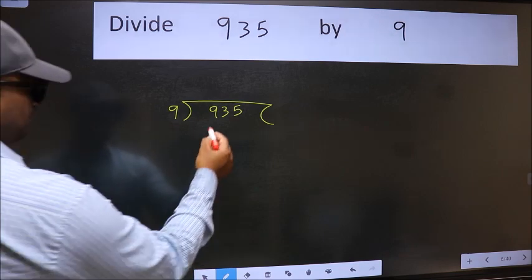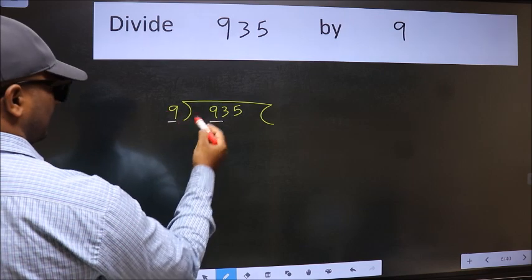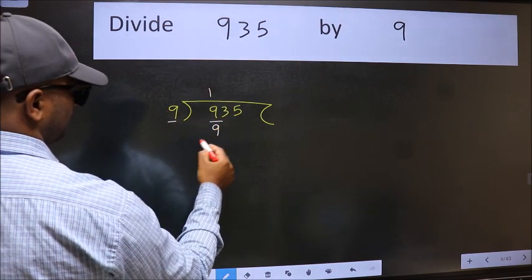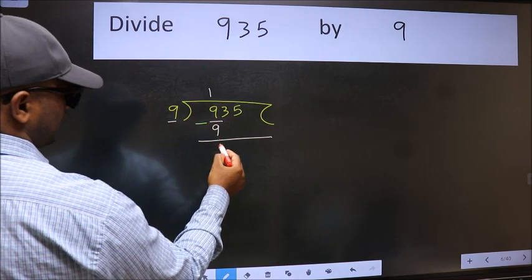Next, here we have 9 and here 9. When do we get 9 in 9 table? 9 once 9. Now we should subtract. We get 0.